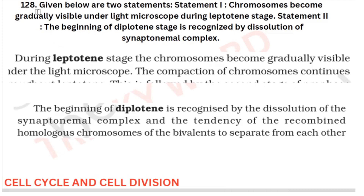Two statements are given. Statement one: chromosomes become gradually visible under the light microscope during the leptotene stage — in your NCERT they have given it will become gradually visible during leptotene, so statement one is correct. Statement two: the beginning of the diplotene stage is recognized by the dissolution of the synaptonemal complex — in your NCERT also they have given the same, that the diplotene stage is marked by dissolution of the complex. So both statements are correct. This is from your cell cycle and cell division chapter.